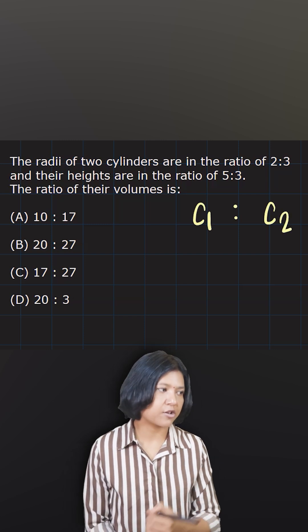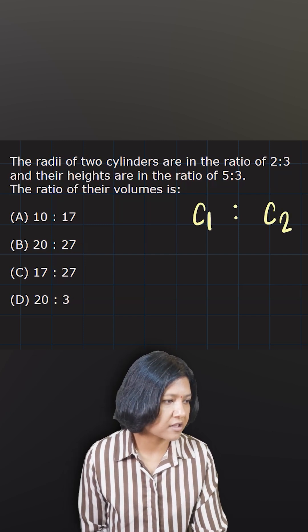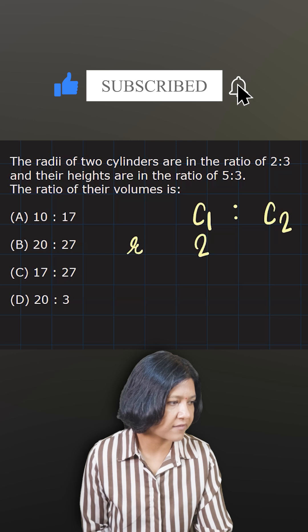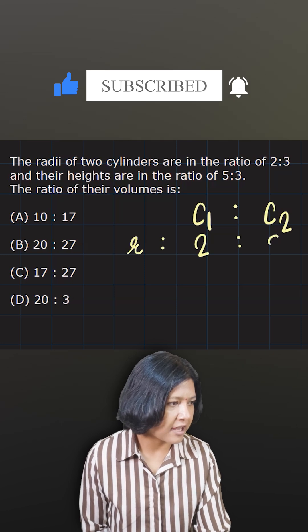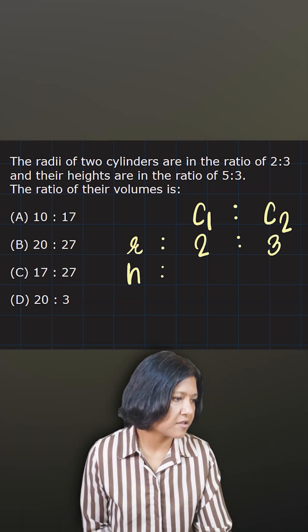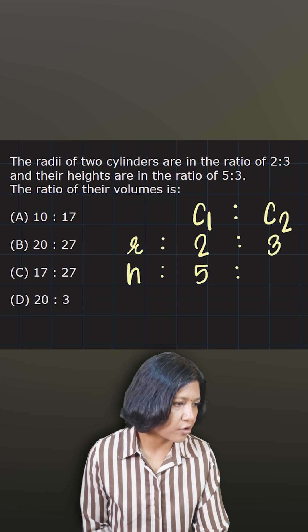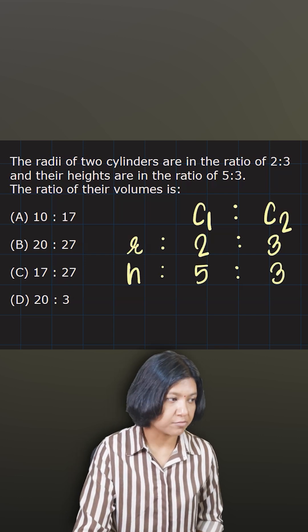The ratio is given to you. The radius has been given to you as 2 is to 3, and height has been given to you in the ratio of 5 is to 3. So the question wants you to find the ratio of their volume.